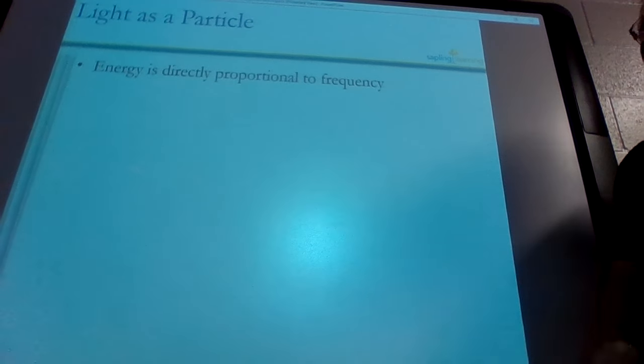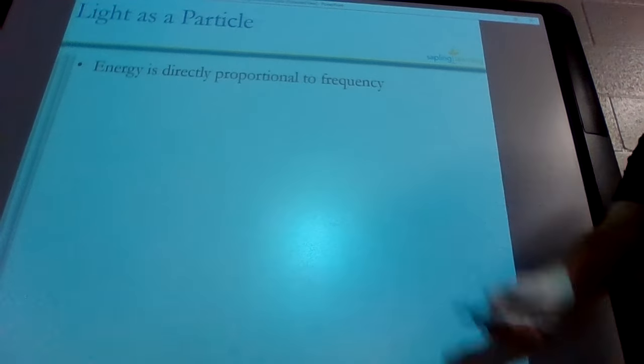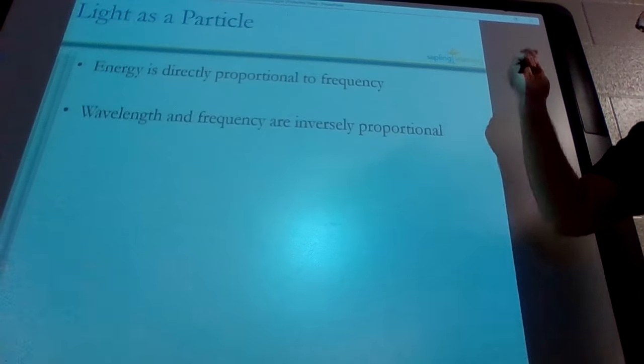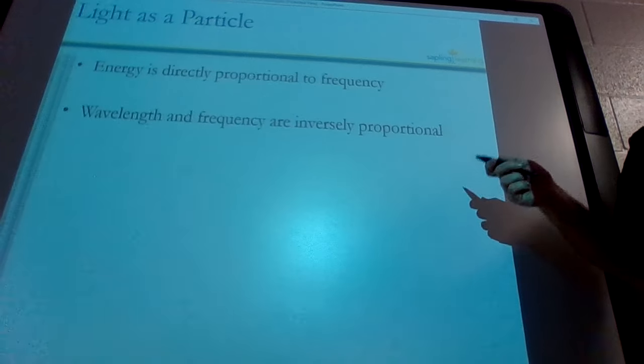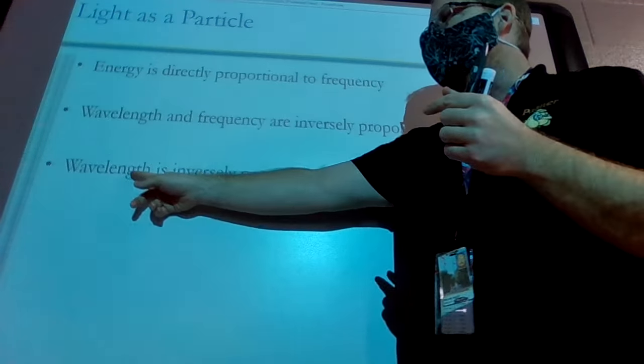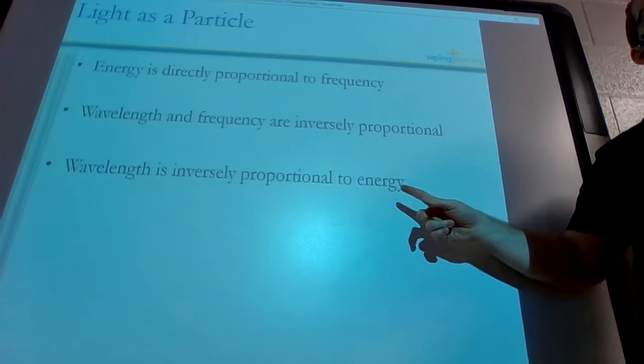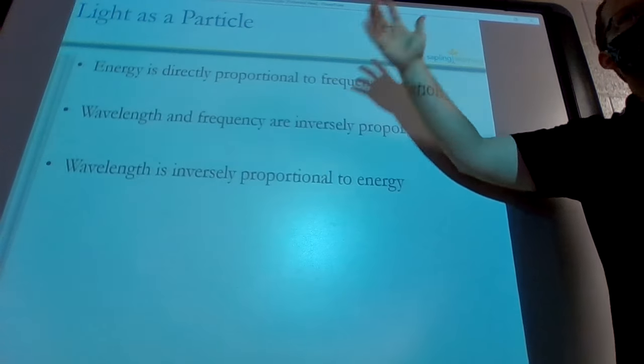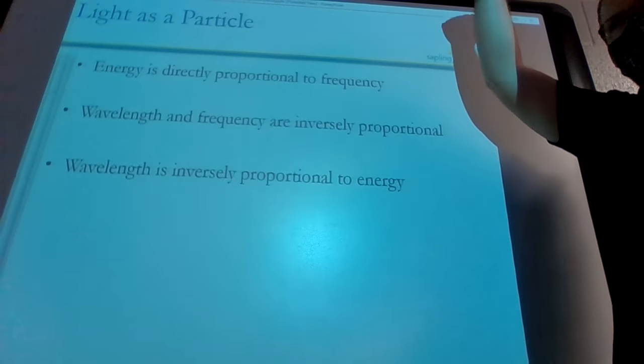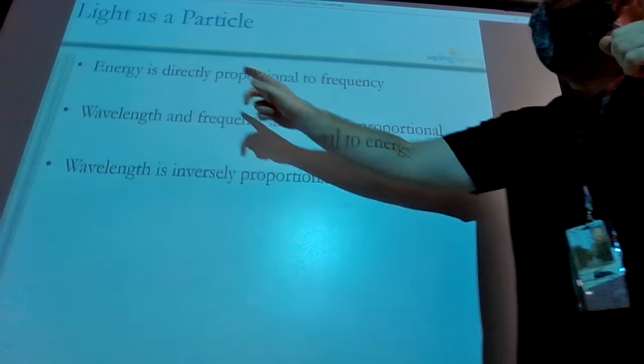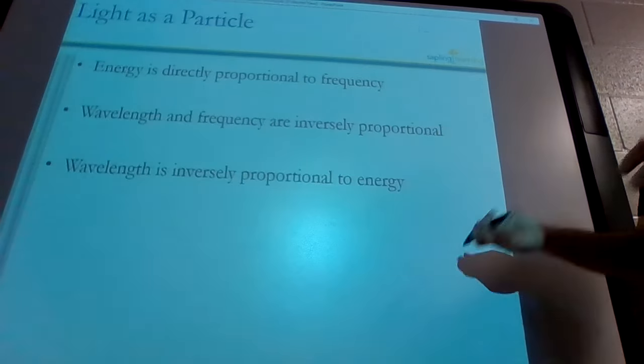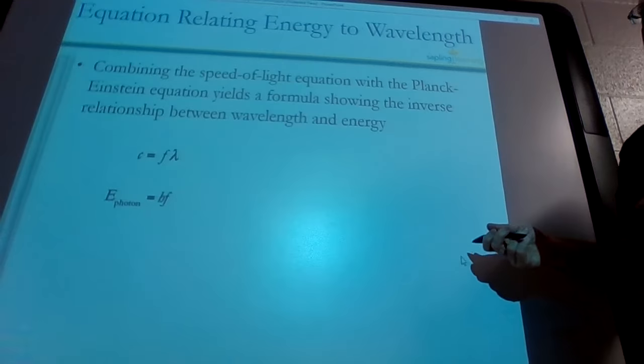So remember, energy is directly proportional to frequency. They go up and down together. Your wavelength and frequency are inversely proportional. And if you move around the equations a little bit, you can see that your wavelength is also inverse to your energy. So the bigger the wavelength, the lower the energy. And the smaller the wavelength, the higher the energy. They're going to go opposite. So remember, inverse is like opposite. Direct is together. All right. You'll see that in other science classes too.